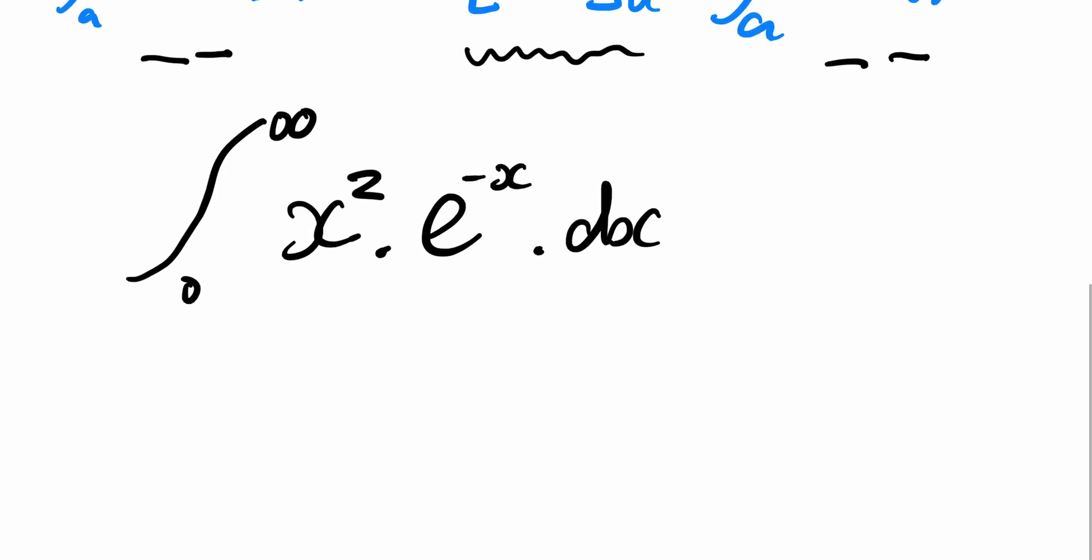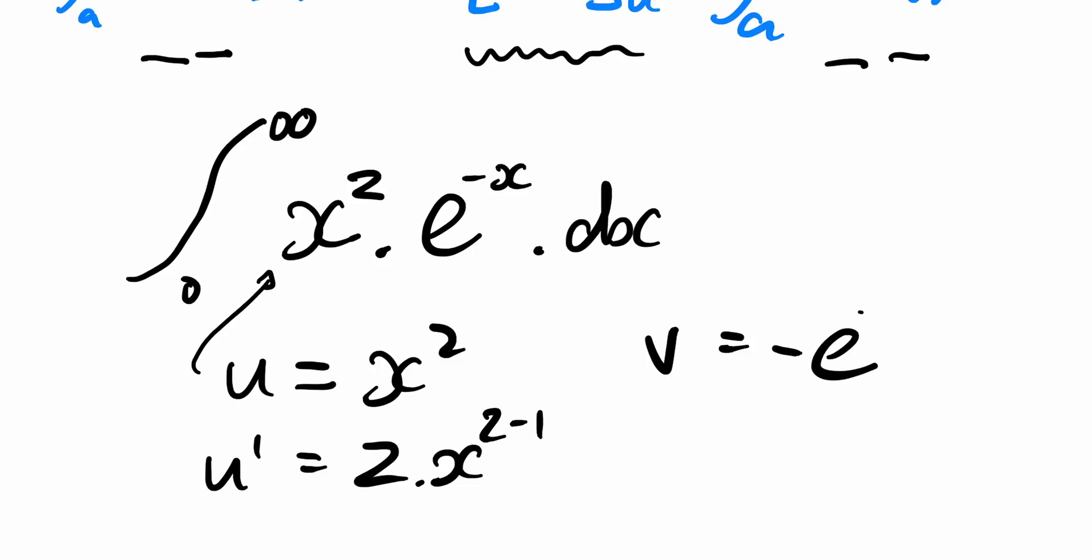And I can now say, my u function is going to equal x to the z, which you can see, that's what we've got up there. And the derivative of u is z times x to the z minus one, that'll come in handy later. And my v function is going to equal negative e to the negative x, which means this derivative equals e to the negative x.